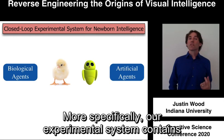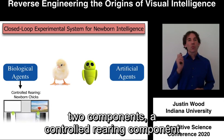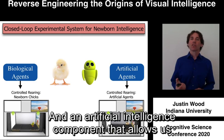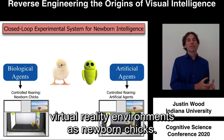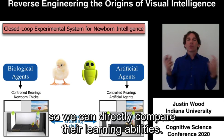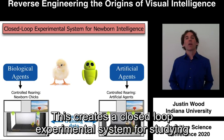More specifically, our experimental system contains two components: a controlled rearing component for collecting detailed behavioral data from newborn chicks raised in virtual reality environments, and an artificial intelligence component that allows us to raise artificial agents in the same virtual reality environments as newborn chicks. Critically, the newborn chicks and the artificial agents receive the same set of training data, so we can directly compare their learning abilities. This creates a closed-loop experimental system for studying the origins of visual intelligence.